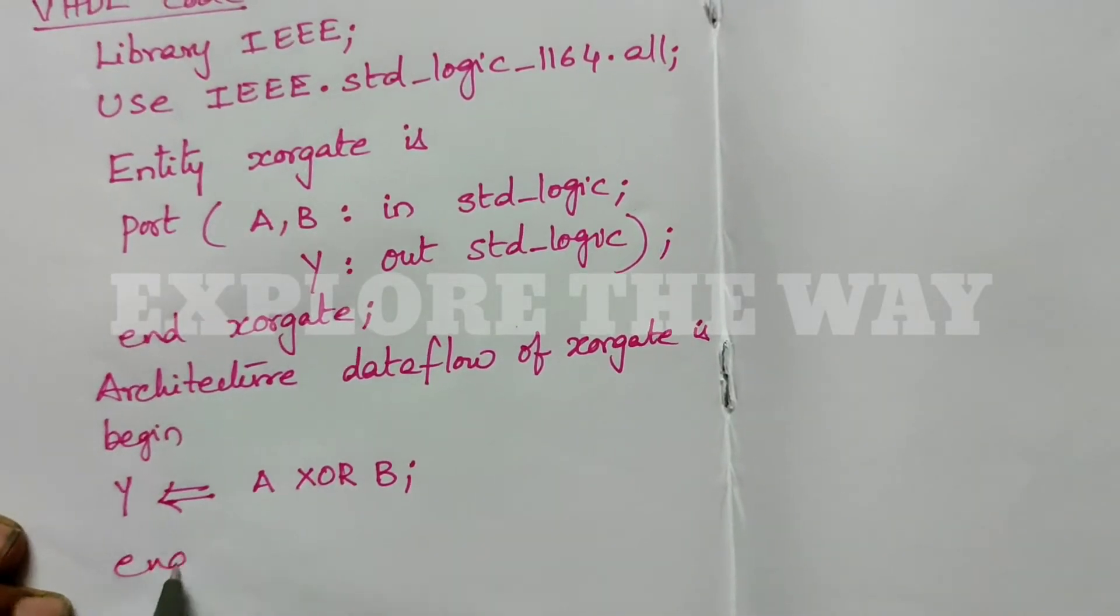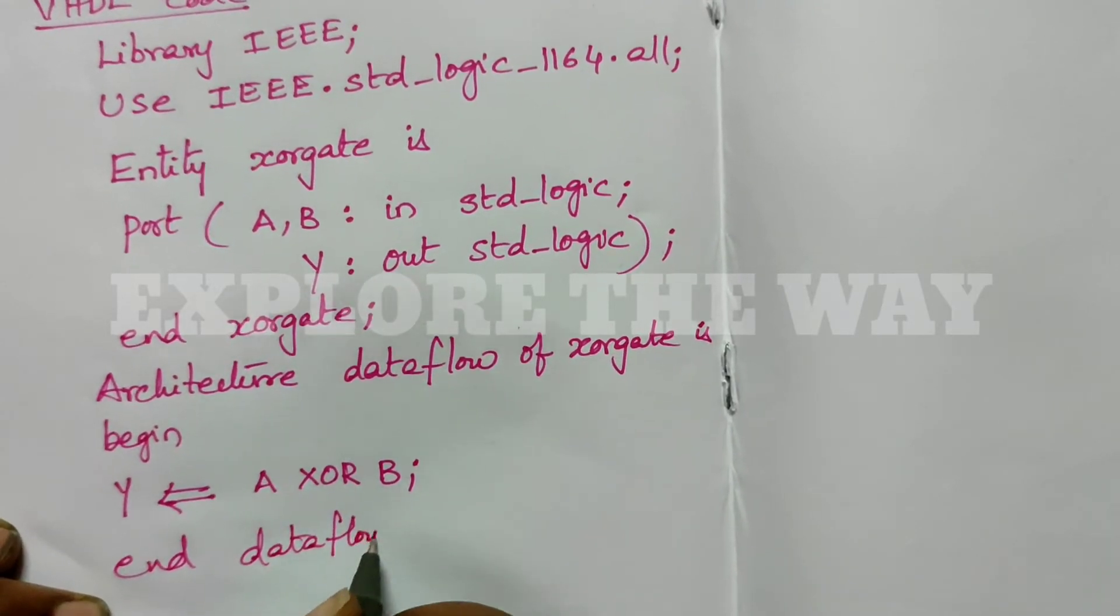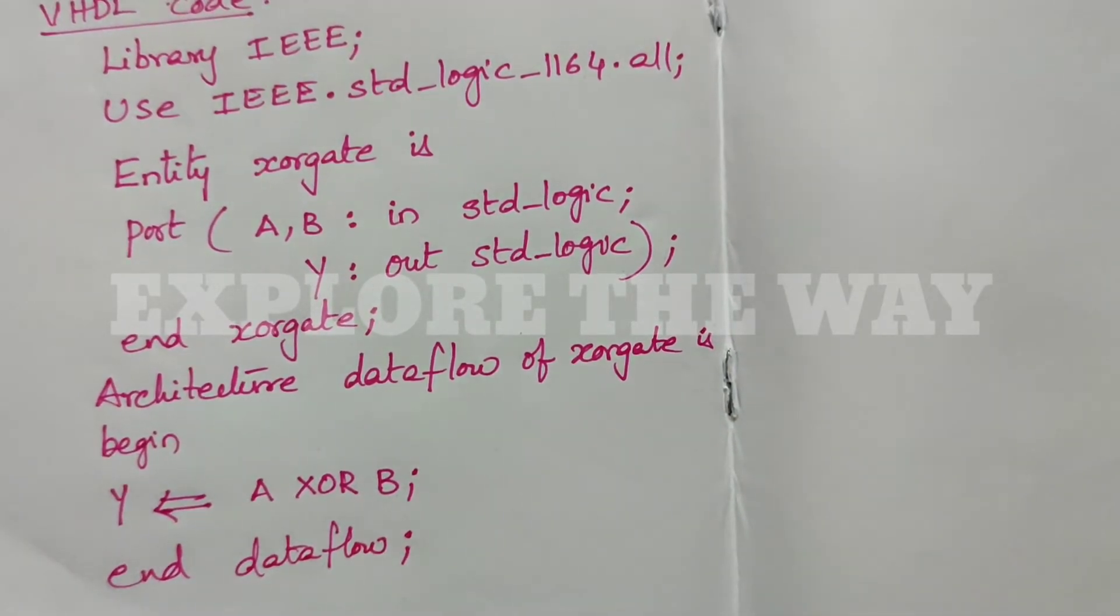Then end the architecture: End dataflow. This is the architecture of the XOR gate in dataflow style.